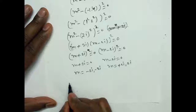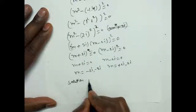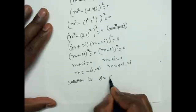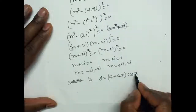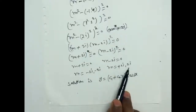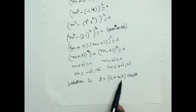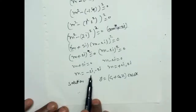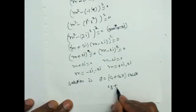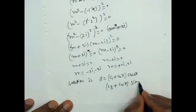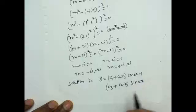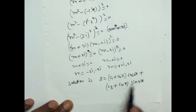Then the solution is: for m = +2i, +2i (repeated), the solution is (c₁ + c₂x)cos(2x); for m = −2i, −2i (repeated), the solution is (c₃ + c₄x)sin(2x) — here the coefficient of i is 2, so we use 2x. Therefore: y = (c₁ + c₂x)cos(2x) + (c₃ + c₄x)sin(2x). This is the solution. Thank you for watching.